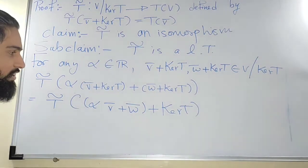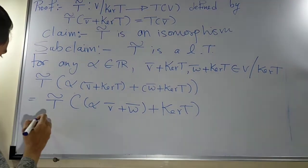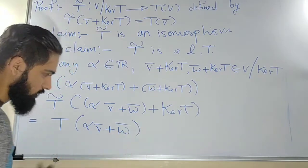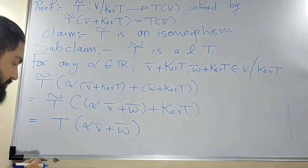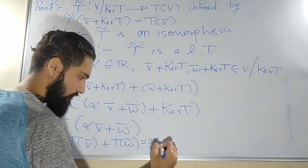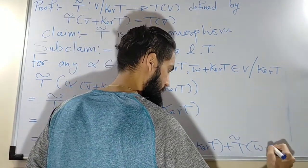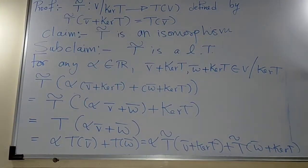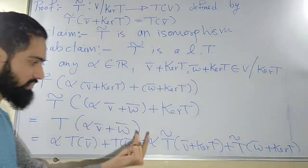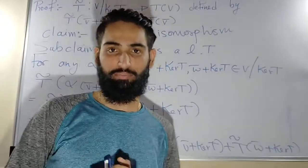Applying the definition of T̃, this equals T(αv̄ + w̄), the image of the representative. Since T is a linear transformation I can split this as αT(v̄) + T(w̄). That equals αT̃(v̄ + kernel(T)) + T̃(w̄ + kernel(T)). So we have proved that T̃ of α times the first element plus the second element equals α times T̃ of the first plus T̃ of the second. Hence T̃ is a linear transformation.